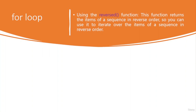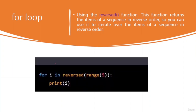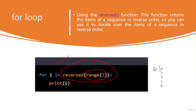You can use the for loop with the 'reversed()' function, which returns items in reverse order. For example, 'for i in reversed(range(5)):' — the range function generates numbers 0 to 4 and 'reversed()' reverses them. The output shows the numbers in reverse order from 4 to 0.